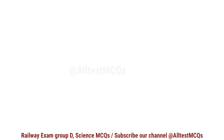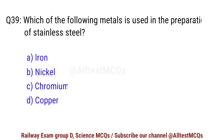Question No. 39. Which of the following metals is used in the preparation of stainless steel? Correct option is C. Chromium.